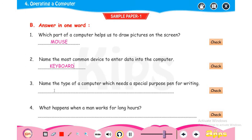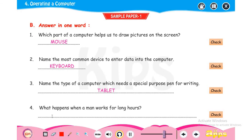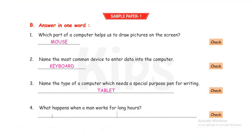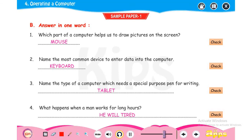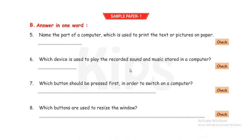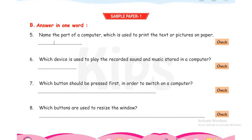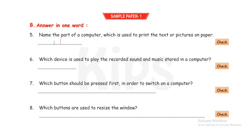In first standard you already learned the keyboard chapter, so keyboard is called an input device which gives input to the computer. Name the type of computer which needs a special purpose pen for writing — the answer is tablet, from chapter 1. What happens when a man works for long hours? He will get tired. Name the part of a computer used to print text or pictures on paper — the answer is printer, which gives us a hardcopy.